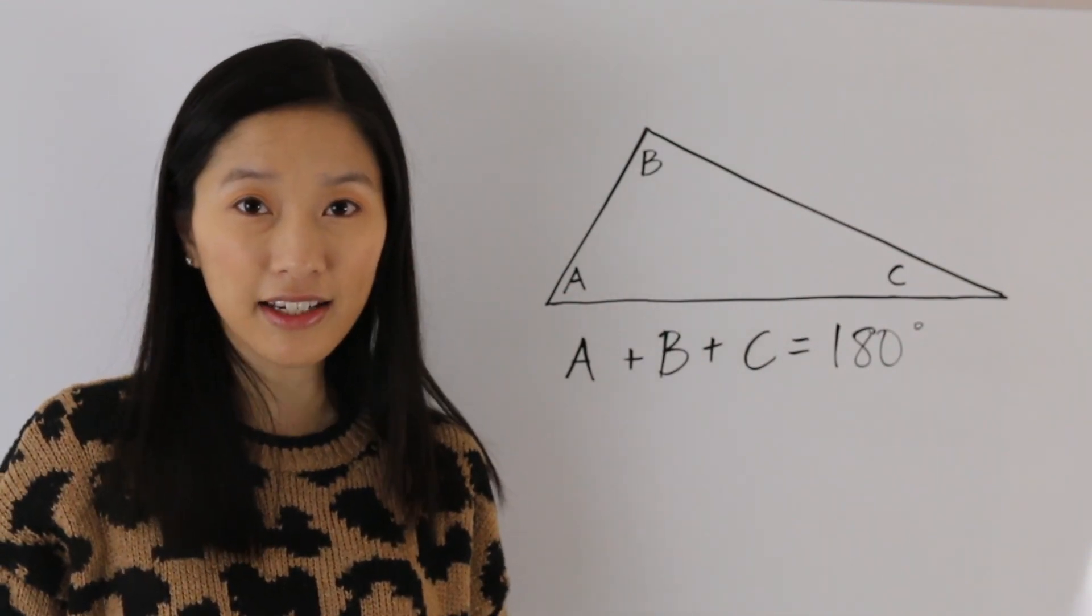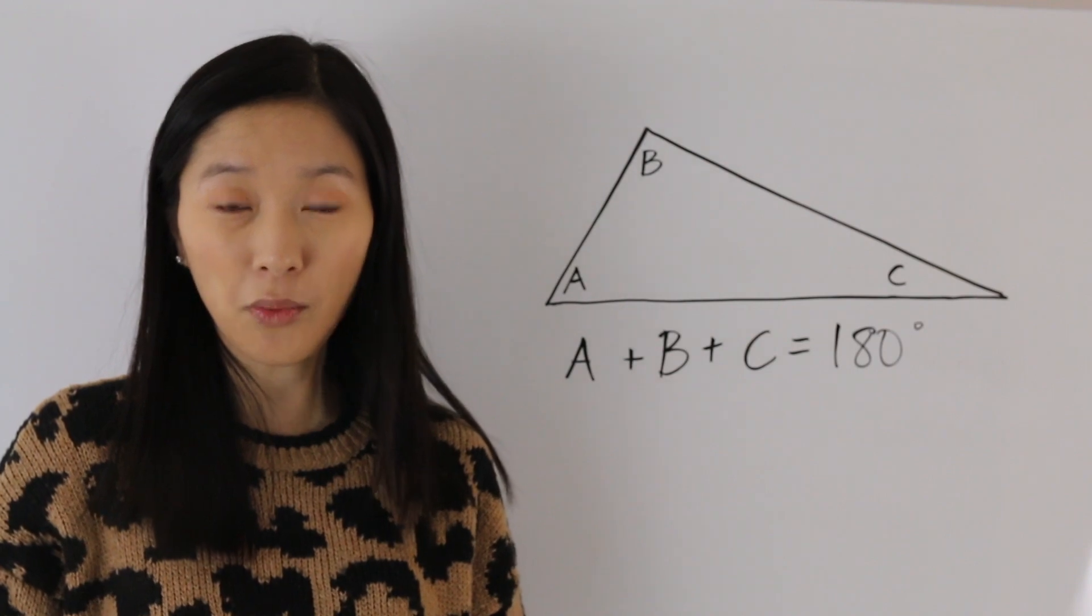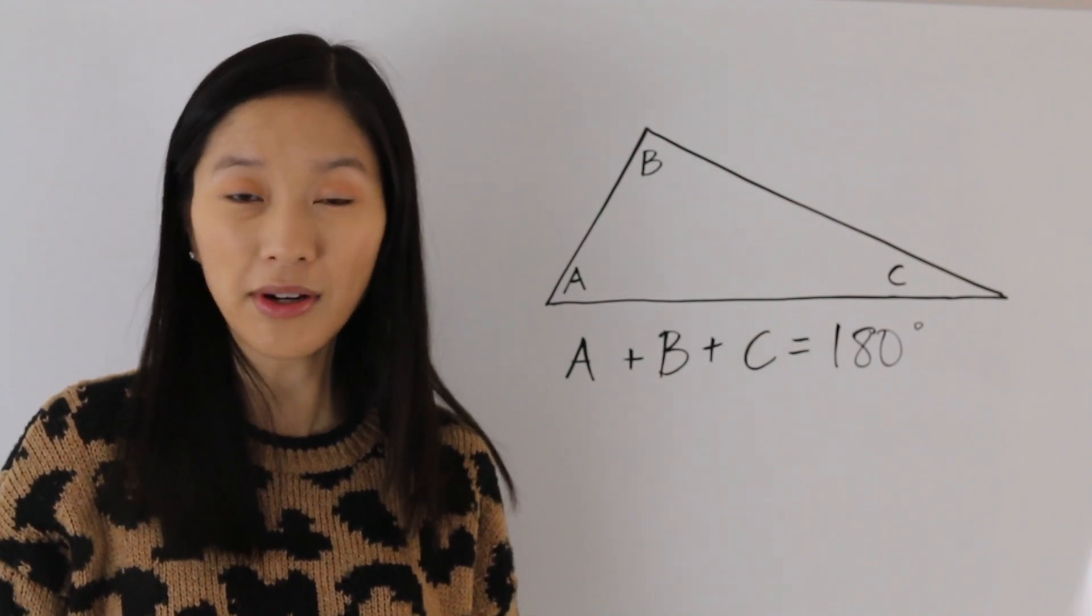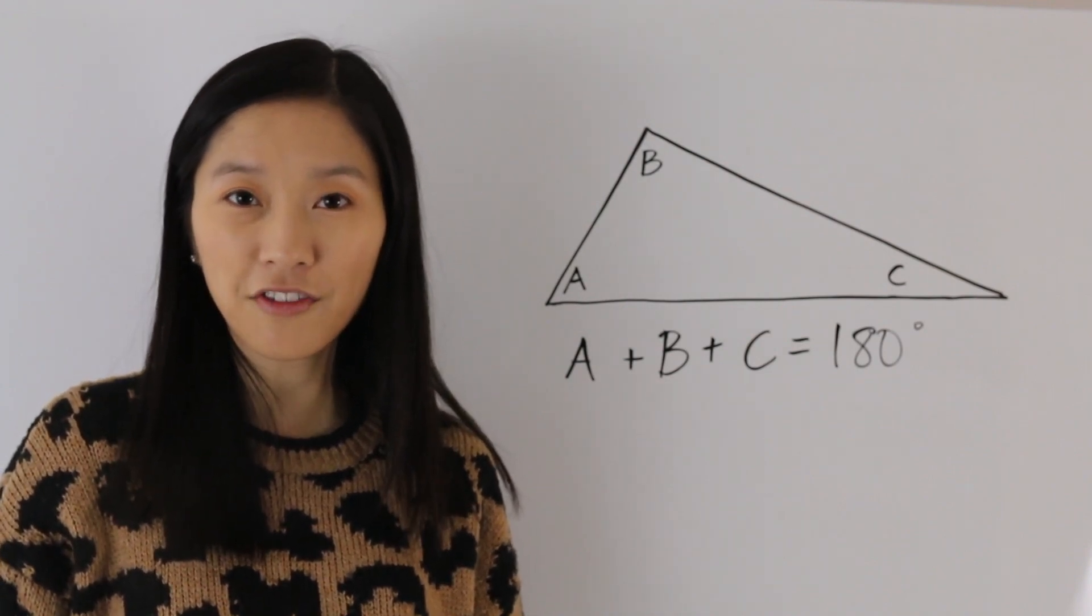So we end up with this formula here: A plus B plus C is equal to 180 degrees, where each of those three letters denote an angle. So let's take a look at a few examples.